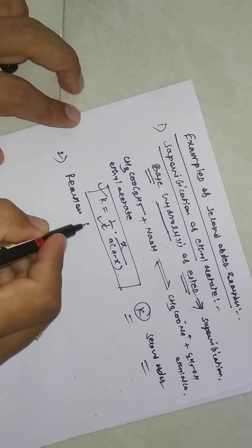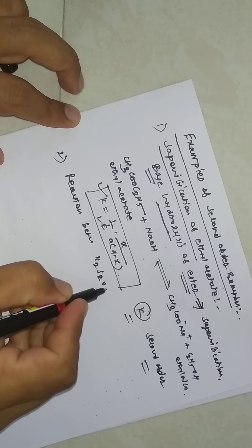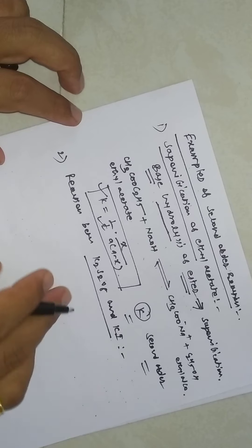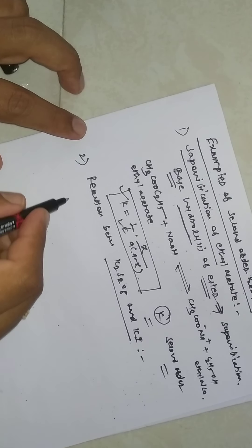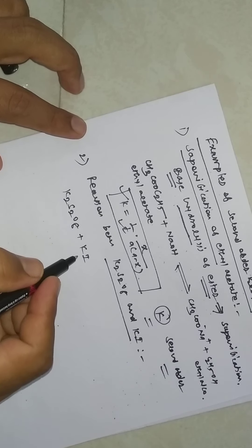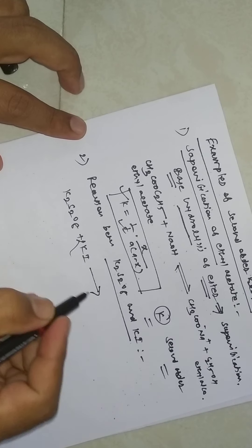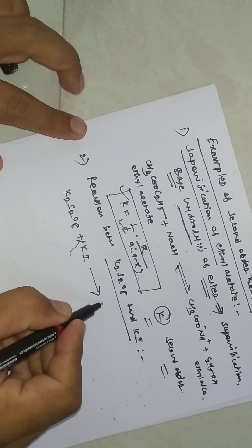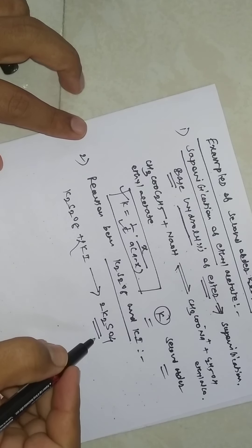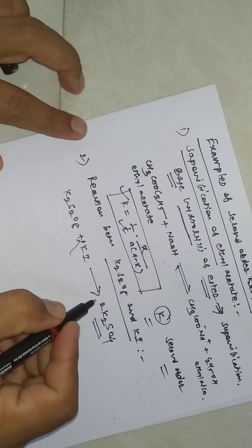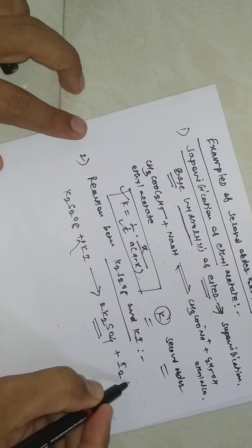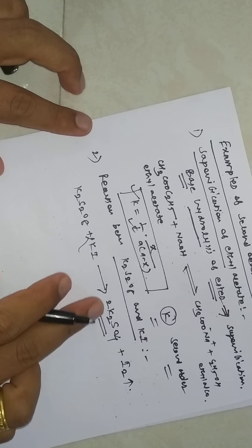Now we will discuss the second example: the reaction between K₂S₂O₈ (potassium persulfate) and KI (potassium iodide). The balanced equation is K₂S₂O₈ plus 2KI, forming 2K₂SO₄ (potassium sulfate) with the liberation of iodine I₂.